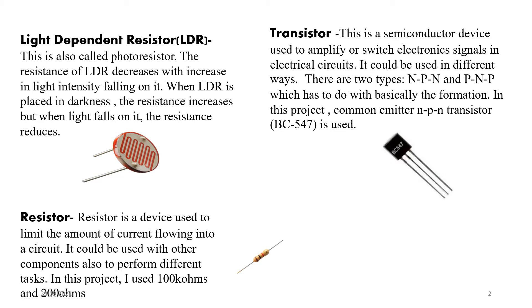The transistor is a semiconductor device used to amplify or switch electronic signals in an electric circuit. There are basically two major types — NPN and PNP — based on the formation of the transistor. In this project, the common emitter NPN transistor is used, that is the BC547. Some use the 557, but I think that one is PNP, so it depends on your choice.